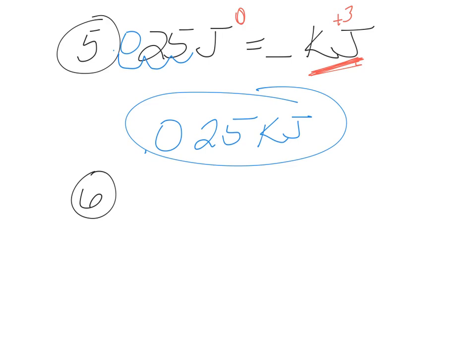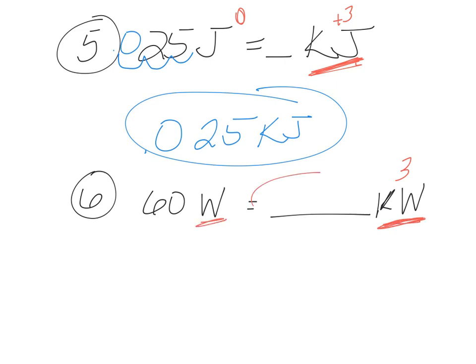Number six: 60 watts equals how many kilowatts? A watt is a measure of electricity and a standard unit. A kilo is 10 to the third, so I need to move my decimal three spaces. I'm going to a larger unit — kilowatts is bigger — so my number has to be smaller. Moving the decimal one, two, three, the answer is 0.06 kilowatts.